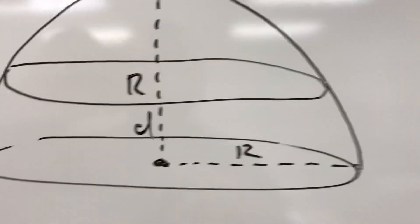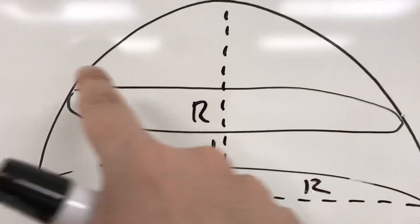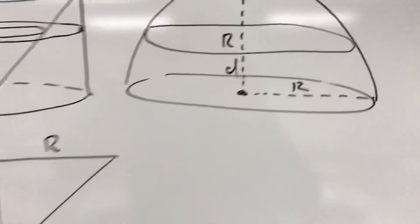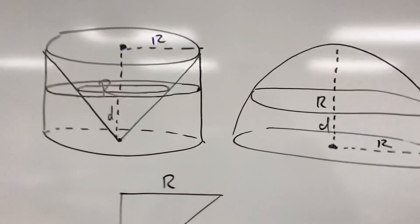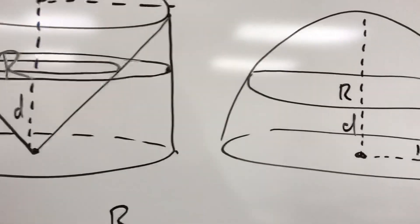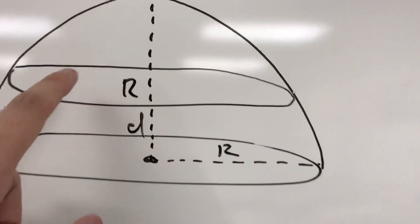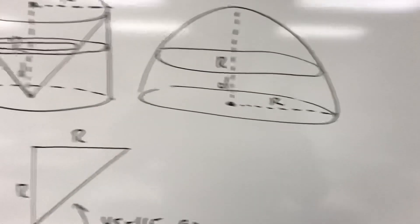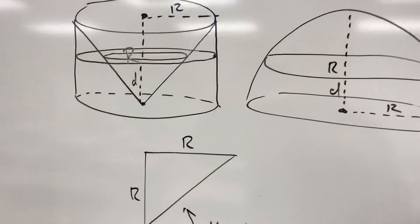At the same time, as you move higher up the sphere, the area of the cross-sectional circle slice is also decreasing. And the claim here is that this ring at any level will be the same area as this cross-sectional circle at any level. So we just need to write expressions for both of those.